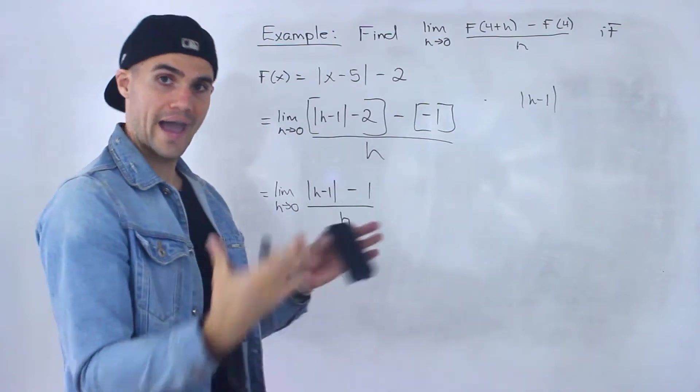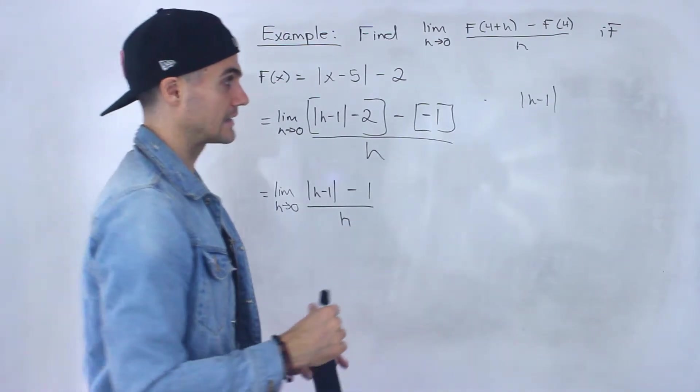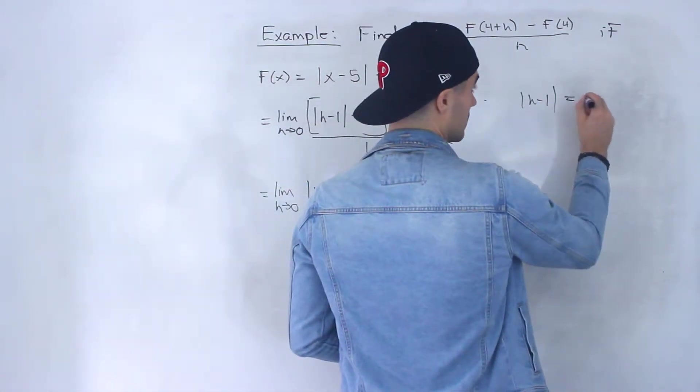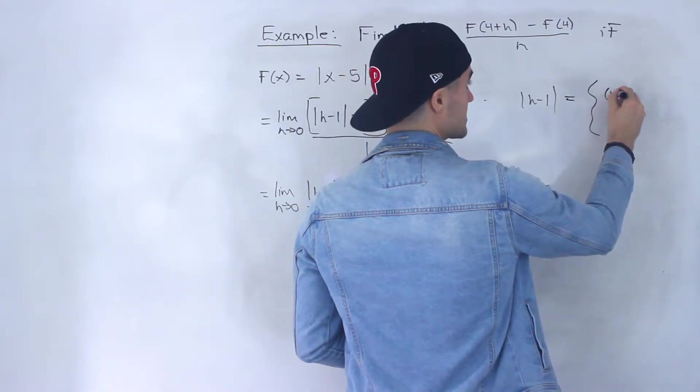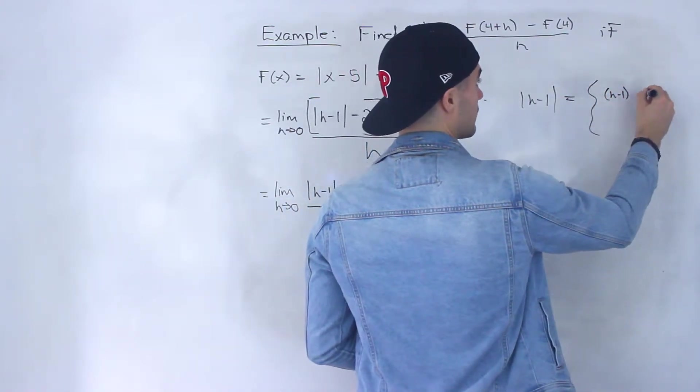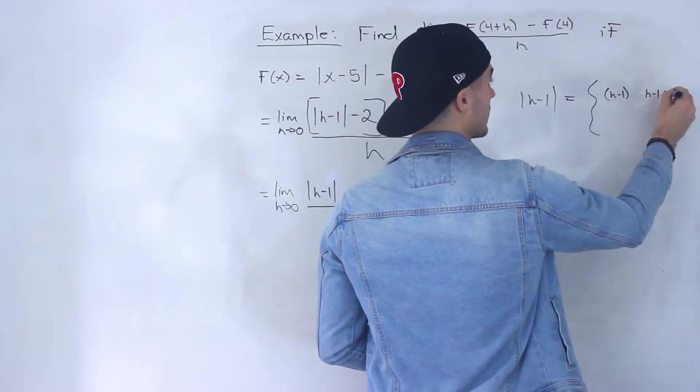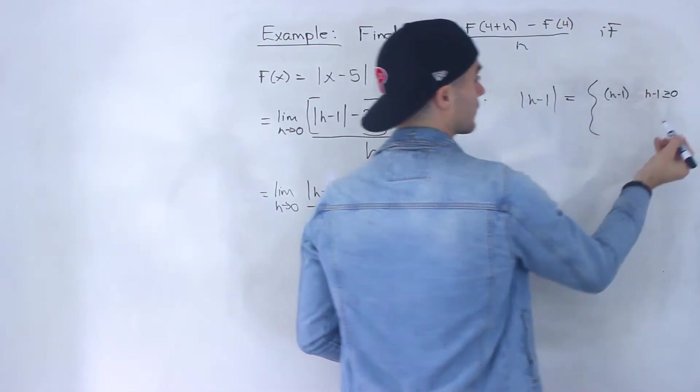As we've shown through the one-sided limit videos, this here can be rewritten as either positive (h-1) if h-1 is greater than or equal to 0.